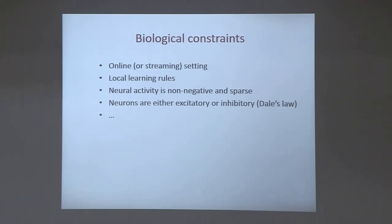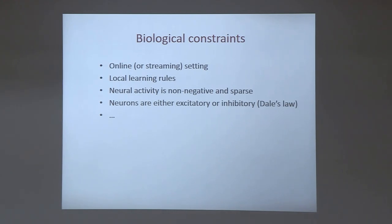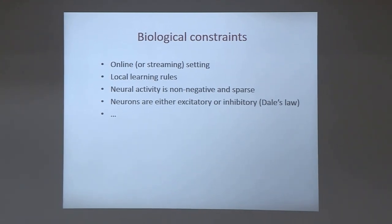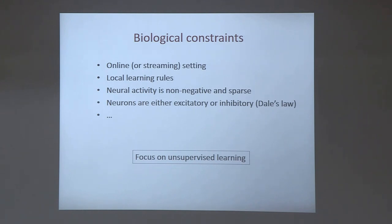That's how we thought when we started this work. But over a few years after developing this direction, we started to realize that these constraints are not really roadblocks, but more like guardrails — they direct the development of neural networks and help us come up with better algorithms. I'll try to demonstrate this in this talk. One more point: in this talk we will focus on unsupervised learning.